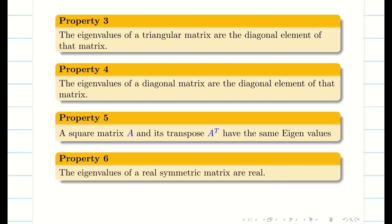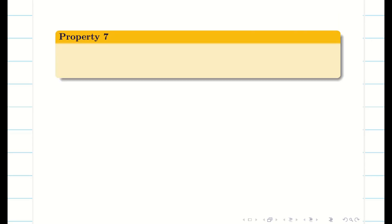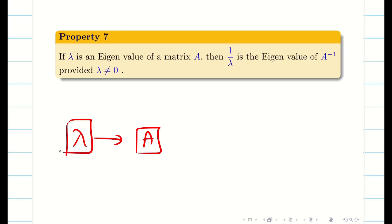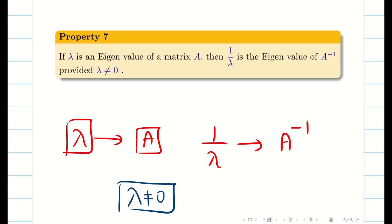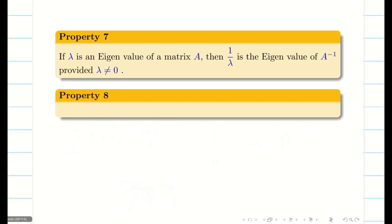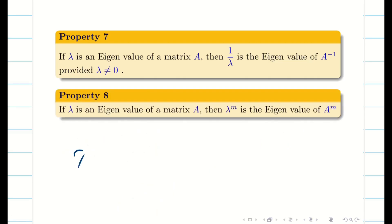Property 6: eigenvalues of a real symmetric matrix are always real numbers. Property 7: if lambda is one of the eigenvalues of A, then 1 by lambda is the eigenvalue of A inverse, provided lambda is non-zero. Property 8: if lambda is the eigenvalue of A, then lambda power M is the eigenvalue of the matrix A power M.